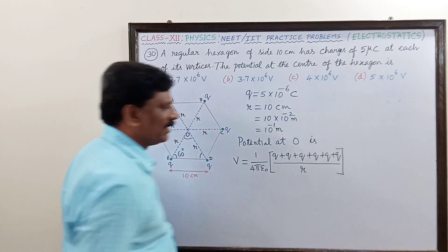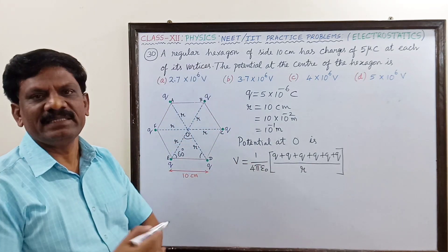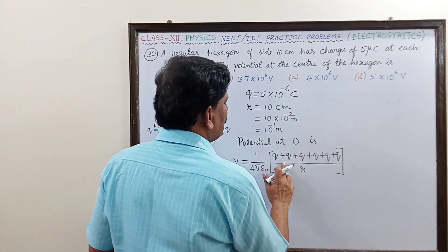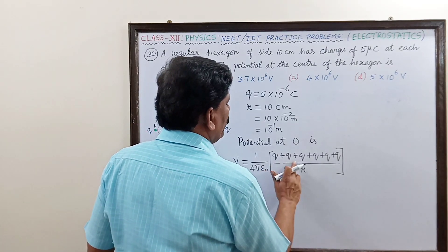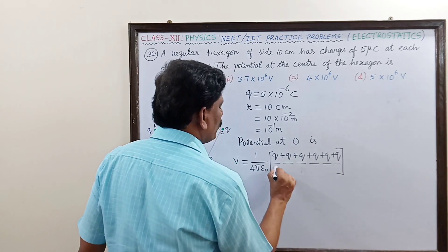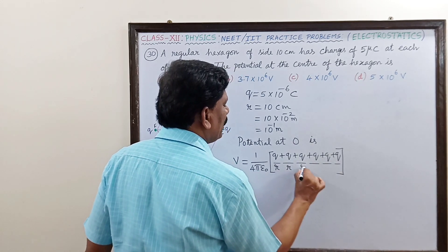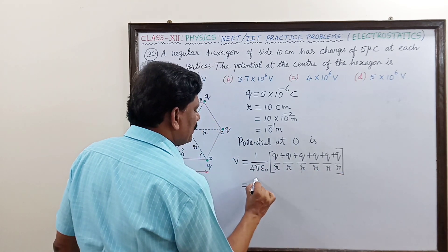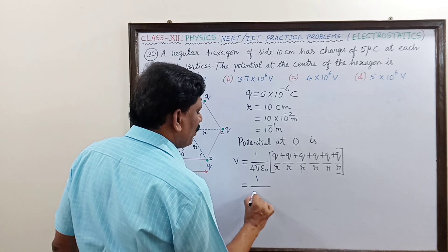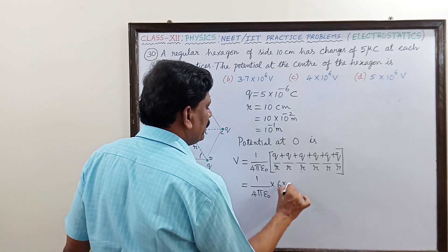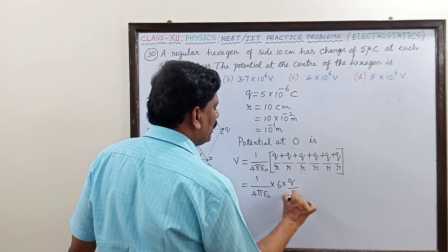So this is six Q by r. Q by r plus Q by r plus Q by r, if you take this is 1 by 4 pi epsilon naught into 6 into Q by r. Six Q divided by r.